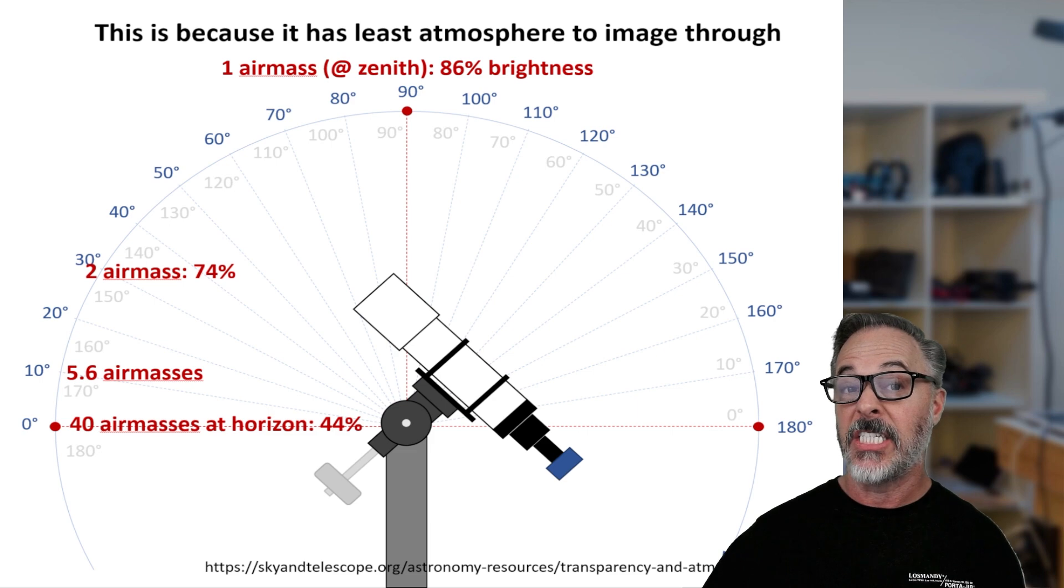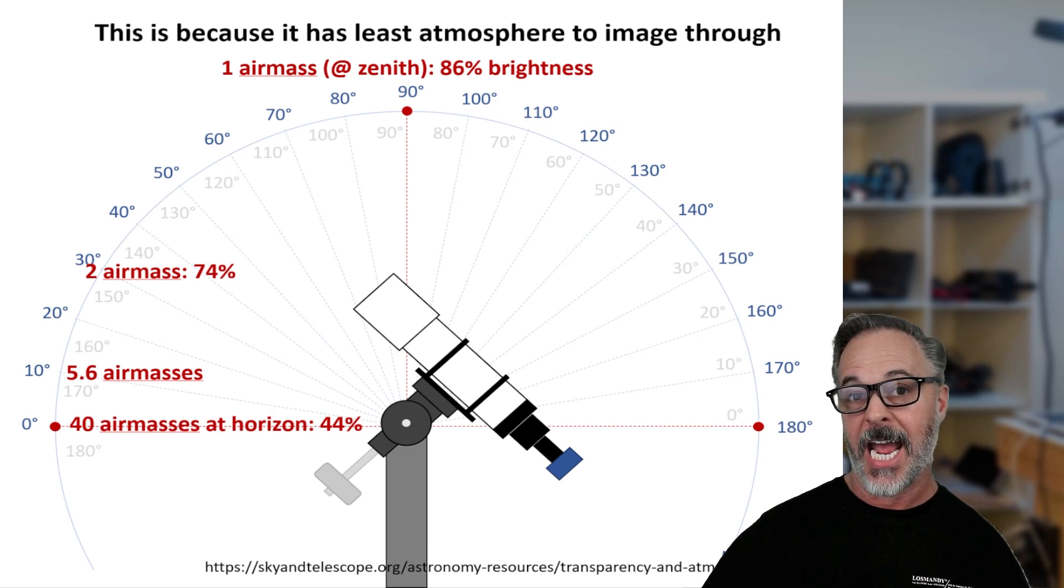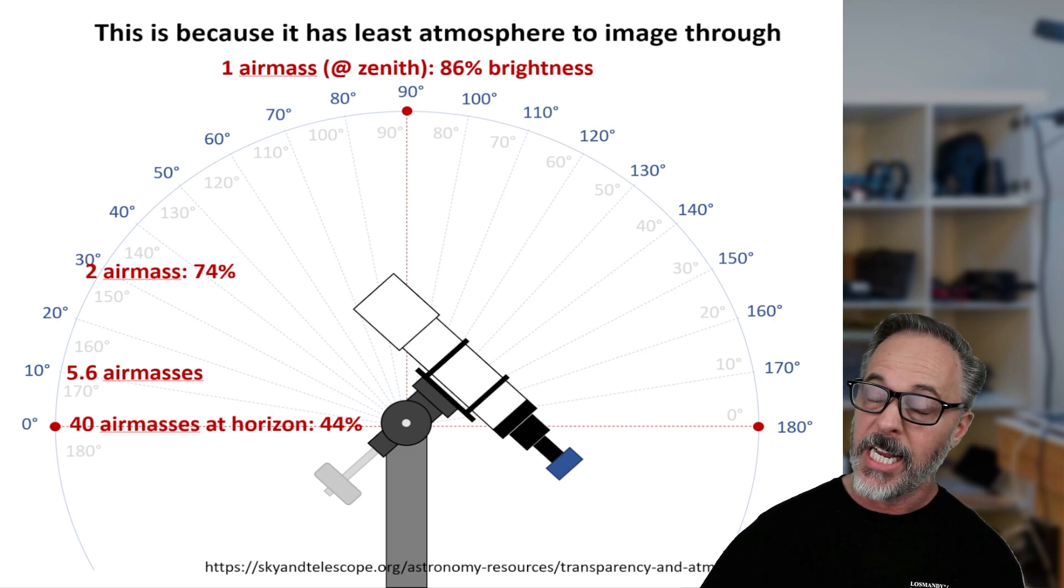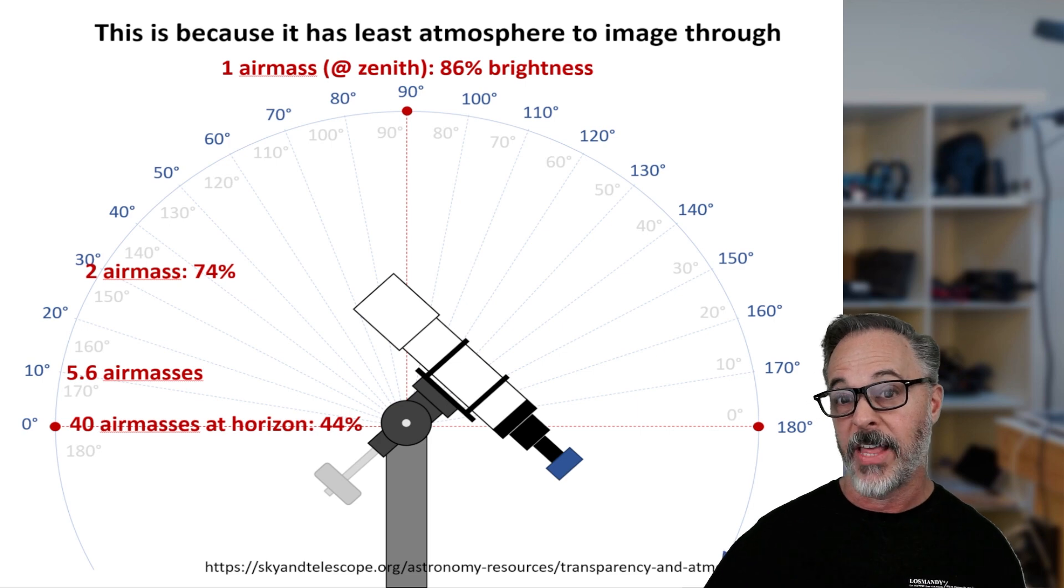So as an example, we're going to talk about a measurement called air mass, and the air mass at the Zenith, where you are, is going to be considered one air mass. And that is essentially, at sea level, it's going to be 86% of the brightness of that target.